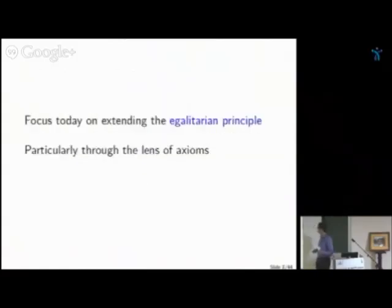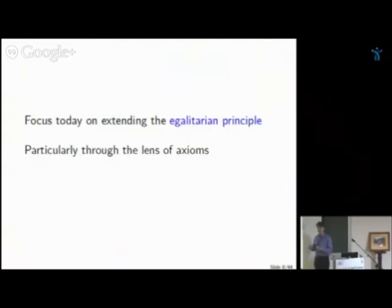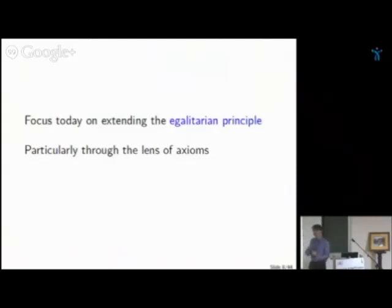In this paper I focus on the egalitarian principle. Instead of just giving definitions, I want to think in terms of axioms. Axioms can be helpful to extend a solution concept: once you understand what egalitarianism means through basic properties, you can ask what the natural extension is — how does an axiom apply with asymmetric information — and try to figure out its implications.